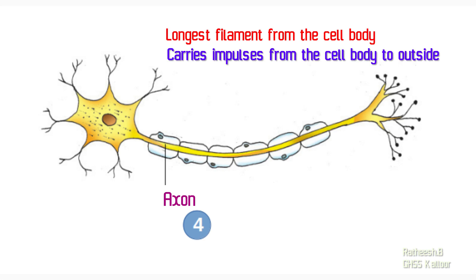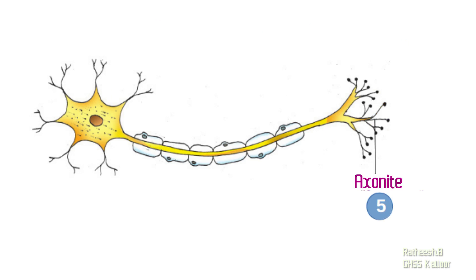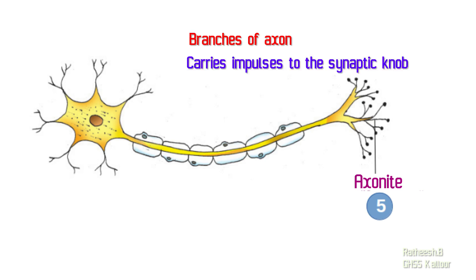The next part of a neuron is axonite. Axonites are the branches of axon. The longest branch of a neuron is called axon, and its branches are called axonite. The function of axonite is to carry impulses to the synaptic node.